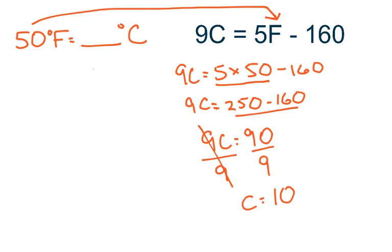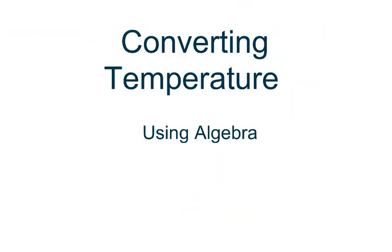And again, you can check yourself. The Celsius number should be smaller than the Fahrenheit number. So again, this was converting temperature using the algebraic equation of 9C equals 5F minus 160.